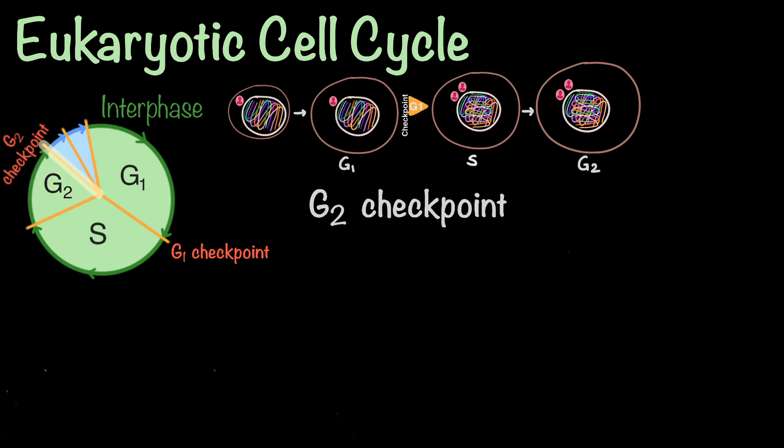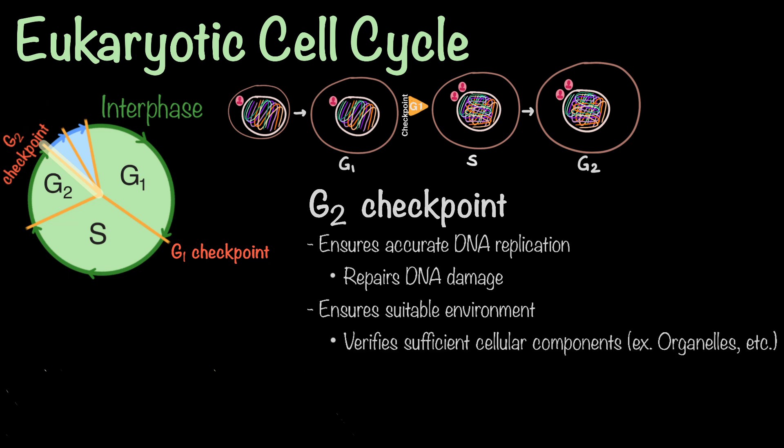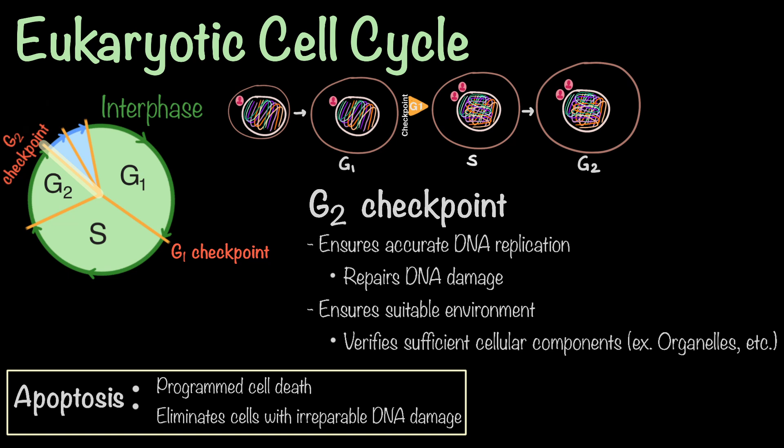After G2, the cell must pass the G2 checkpoint, which ensures that the cell has completed DNA replication accurately. The cell evaluates DNA integrity, repairs any DNA damage, ensures that the cellular environment is suitable for mitosis, and verifies that there are sufficient cellular components such as organelles and proteins to support cell division. If the DNA is damaged and cannot be repaired, the cell may undergo a programmed cell death process called apoptosis, which eliminates cells with irreparable DNA damage and prevents mutations from propagating to future daughter cells.